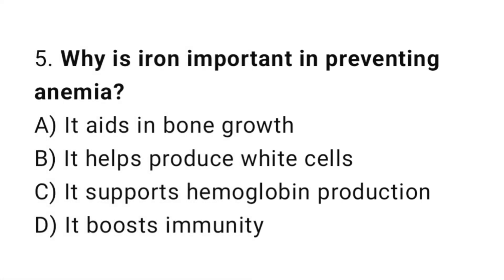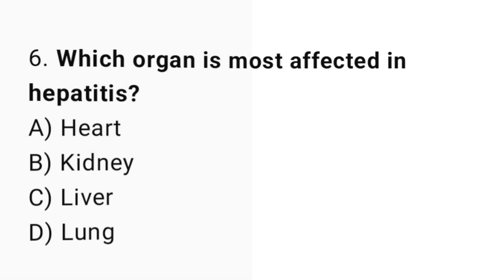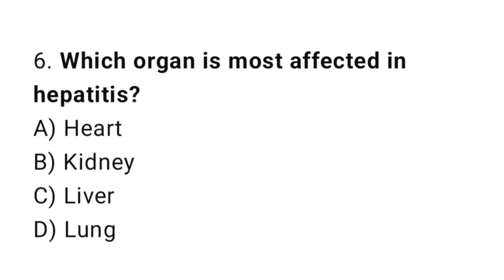Question number five: why is iron important in preventing anemia? The correct answer is C, it supports hemoglobin production. Question number six: which organ is most affected in hepatitis? The correct answer is C, liver.